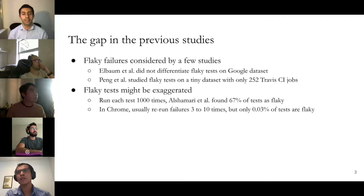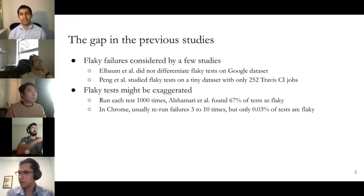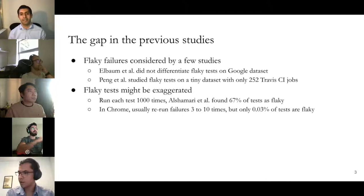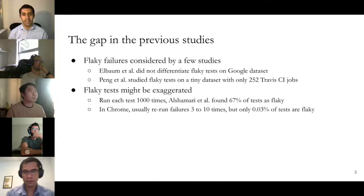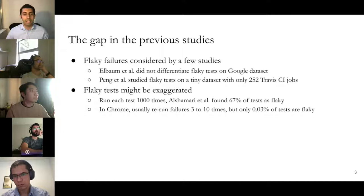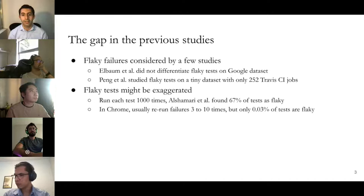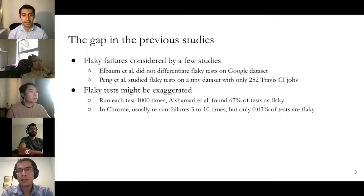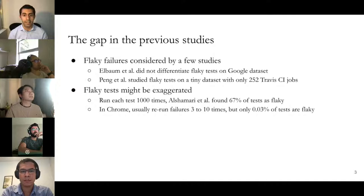The gap in previous studies was that only a few considered flaky failures. ABLUM didn't differentiate flaky tests on the Google dataset. Peng et al. studied flaky tests on a tiny dataset with only 252 Travis CI jobs. Another problem is that flaky tests might be exaggerated by previous works — for example, Asshen Mariette ran each test a thousand times and found 67% of tests as flaky. But in Chrome, they only rerun a failure three to ten times and only 0.03% of tests are flaky. The reason for this huge difference is the methodology used to identify failures.